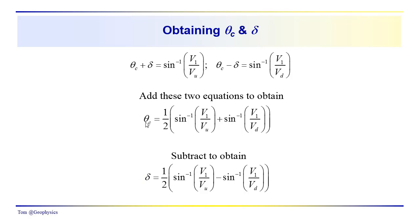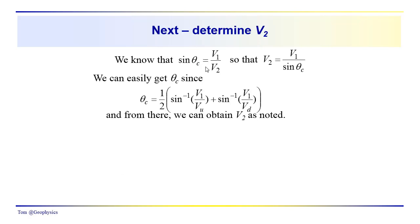So the critical angle and dip are no longer unknowns. We take V1 from the direct arrival, along with the apparent velocities from up-dip and down-dip shots, and solve for θ_c and δ. Once we know the critical angle, we apply Snell's law: sine(θ_c) = V1/V2, so V2 = V1/sine(θ_c). With θ_c calculated, V2 is easily derived.